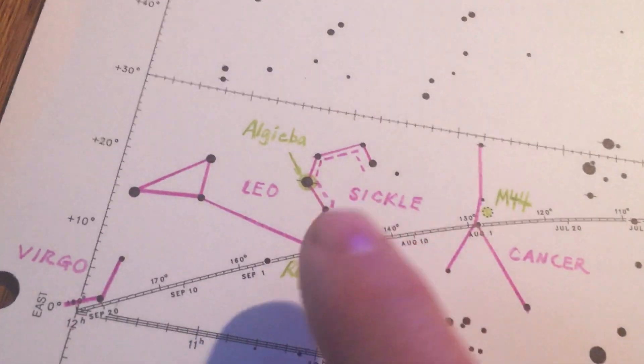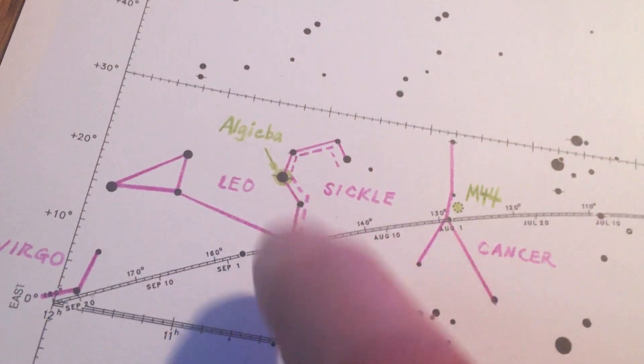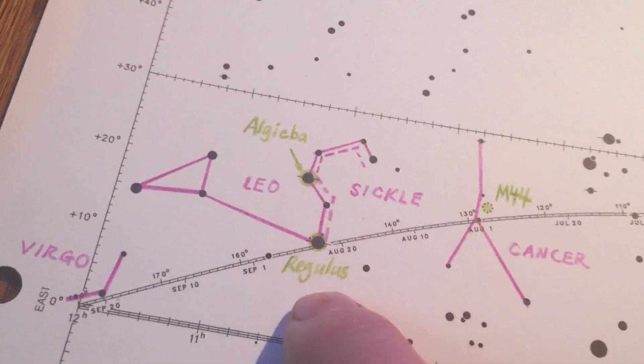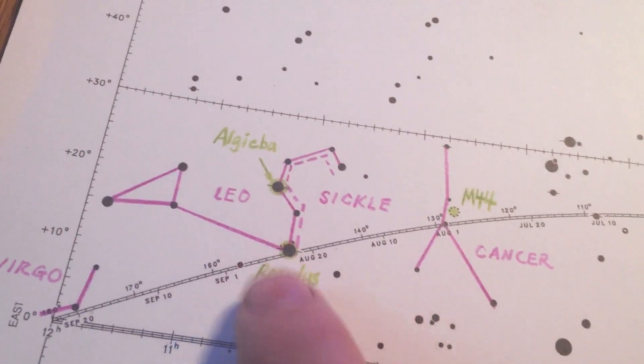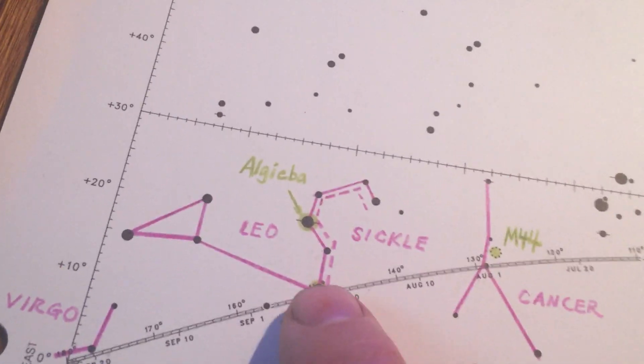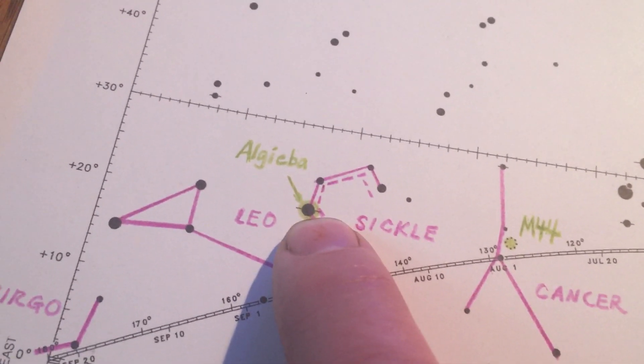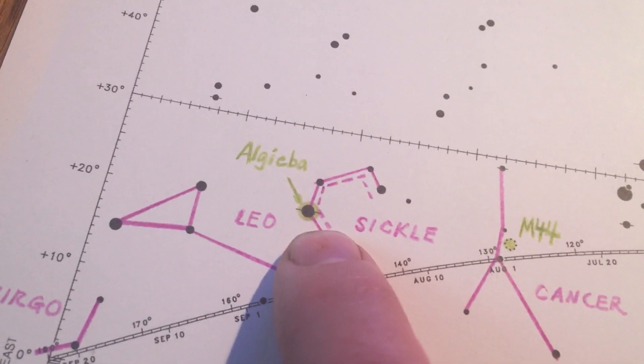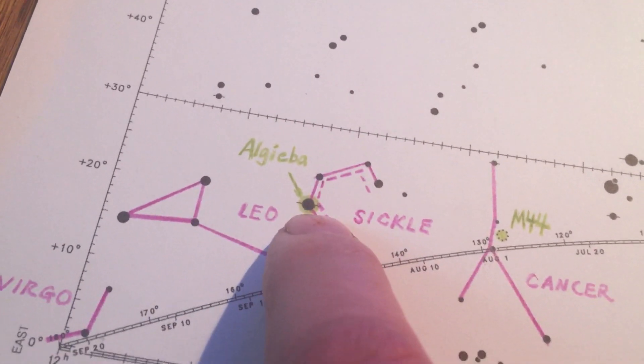Over here in Leo, the bright star at the base of the sickle, or the lion's head and mane, is called Regulus. The silly way I remember that, I think kings are very regal, and a lion is king. So regal, Regulus, regal, Regulus. Now the one star, it's a little tricky. Regulus, this one isn't named on your 01 charts, but I gave you the bear name with the Greek letter. This one is Aljiba. Remember, it starts with an AL, so this is one of our many Arabic stars.